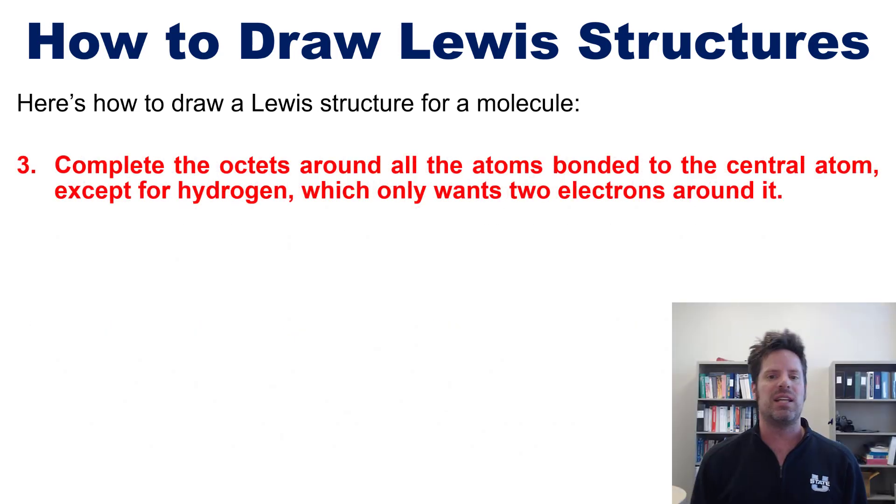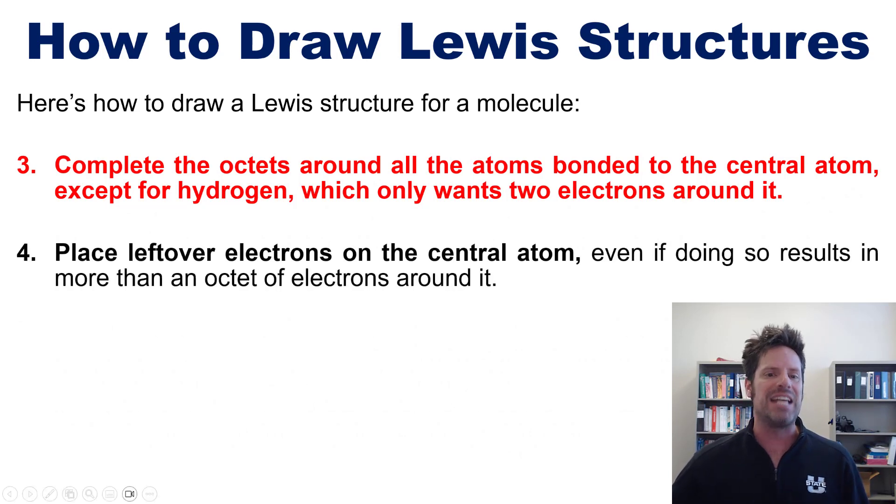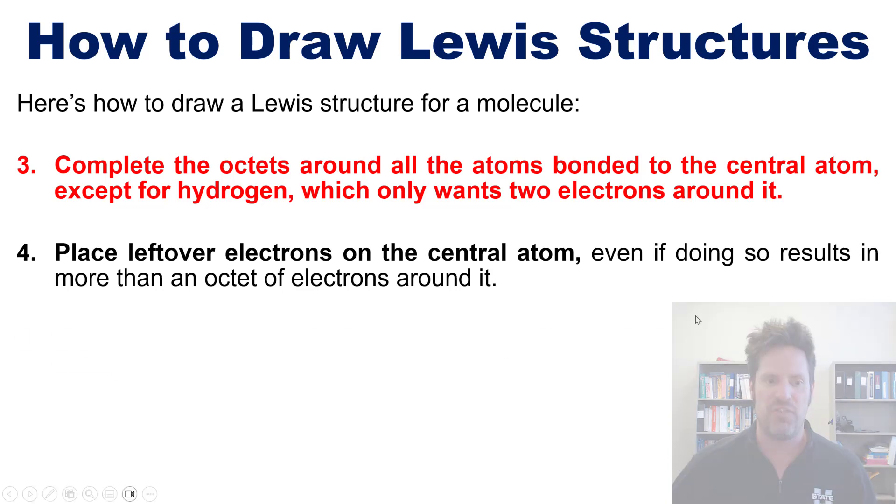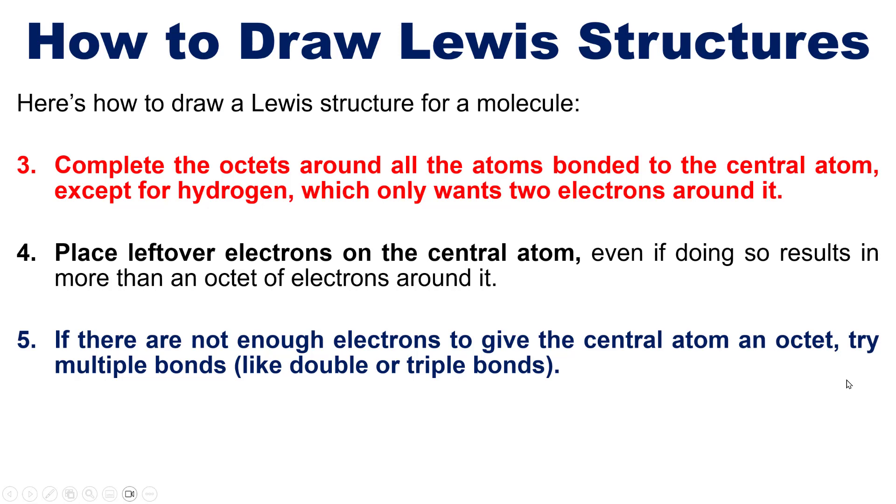Step three, complete the octets around all the atoms bonded to the central atom, except for hydrogen, which only wants two electrons around it. And four, place leftover electrons on the central atom, even if doing so results in more than an octet of electrons around it. And lastly, five. If there are not enough electrons to give the central atom an octet, try forming multiple bonds, such as double or triple bonds. So how do you actually do this? Well,